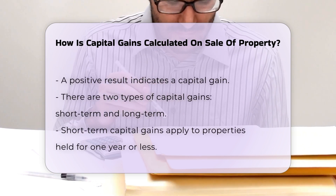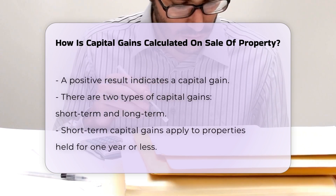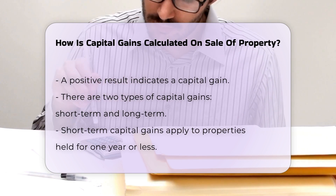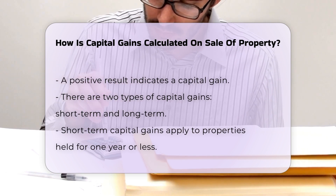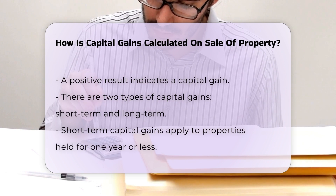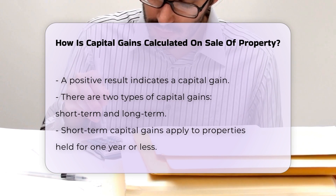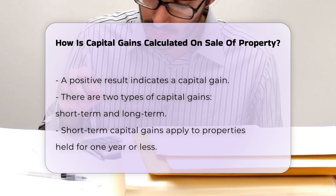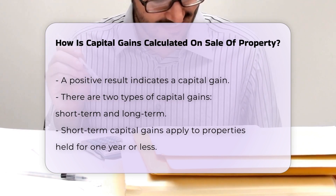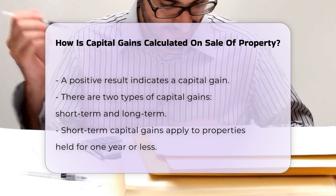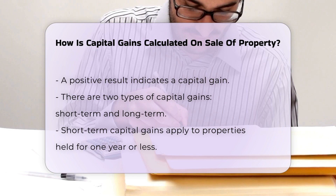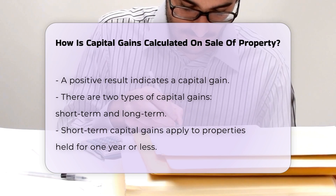If the result is positive, you have a capital gain. It is important to note that there are different types of capital gains. Short-term capital gains apply to properties held for one year or less, while long-term capital gains apply to properties held for more than one year.